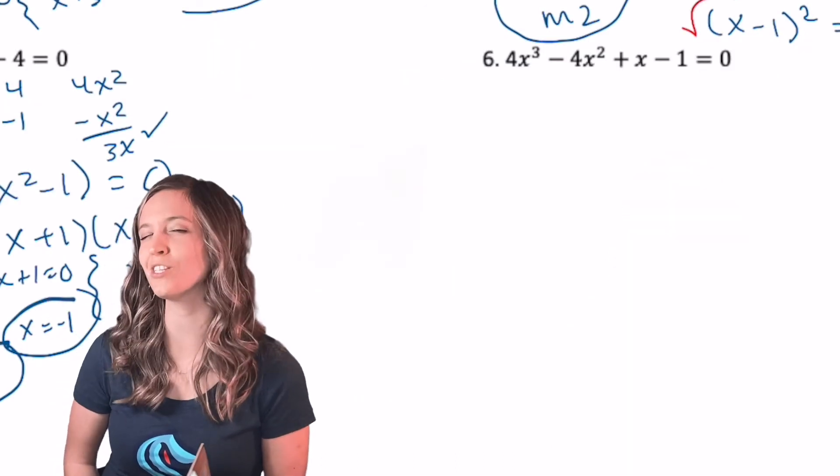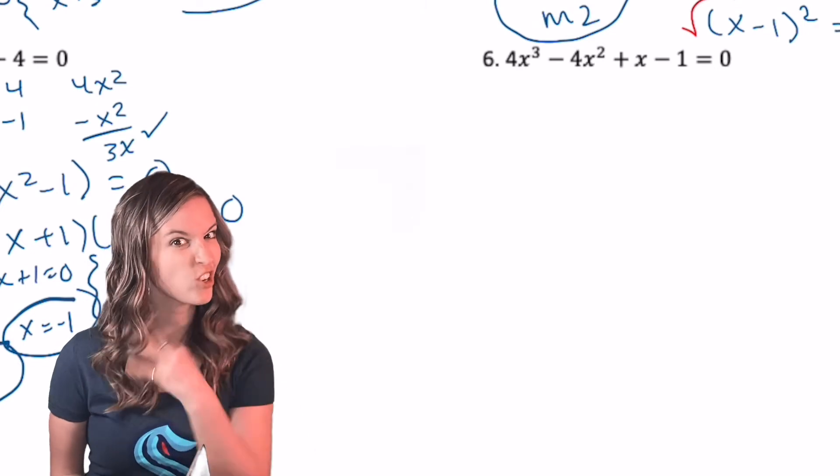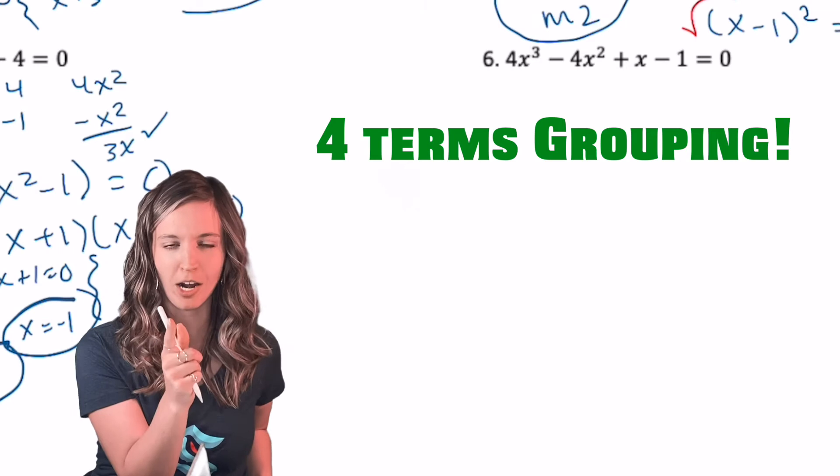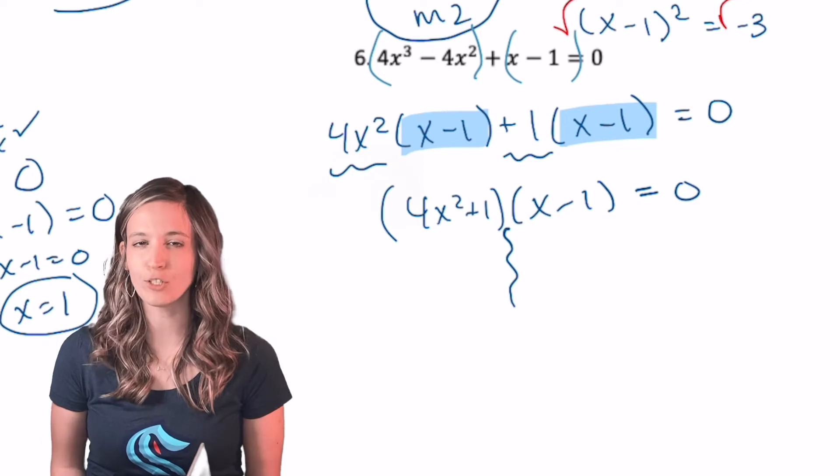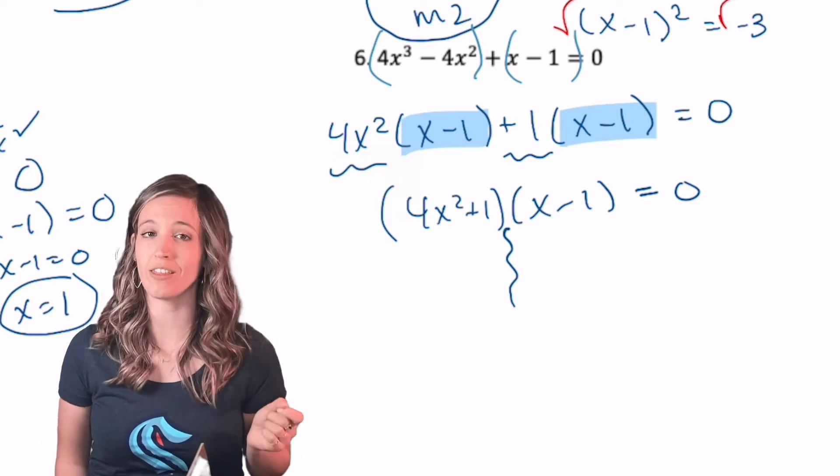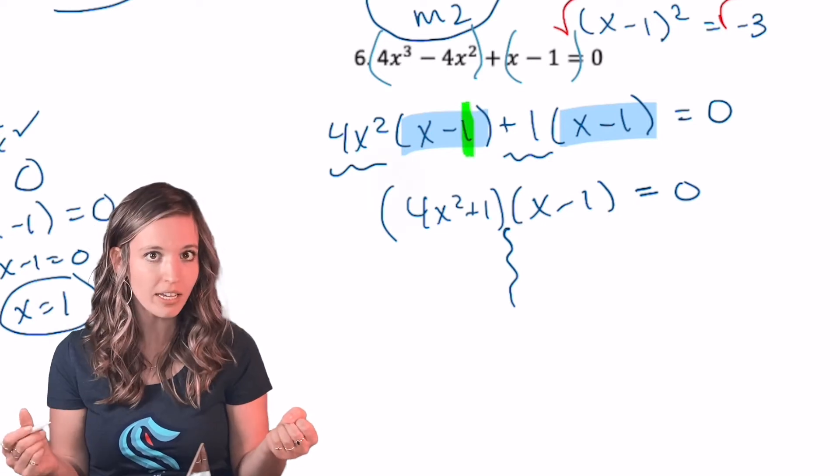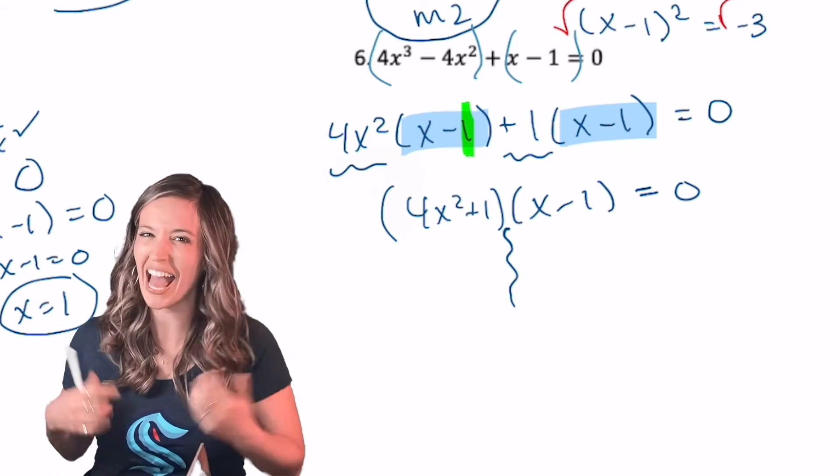On number six, before we get cracking, what's our clue on how we factor this one? There's four terms. So we know we're going to group. So we're going to group, zero product property and solve. Get going. All right. When I factored by grouping, I pulled a four X squared out of the first term. Now remember, if I pull that four X squared out of the first term, I still have a minus one in that four X squared's original position.